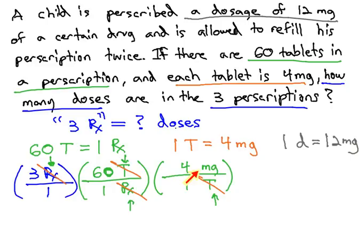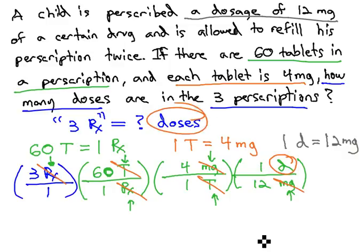However, we're still not looking for milligrams, so we're gonna change the milligrams, using the other conversion factor, into doses. The milligrams in the numerator, we'll divide out with milligrams in the denominator, and change into doses. One dose is 12 milligrams, and finally, the milligrams divide out, and we have the doses that we're looking for.